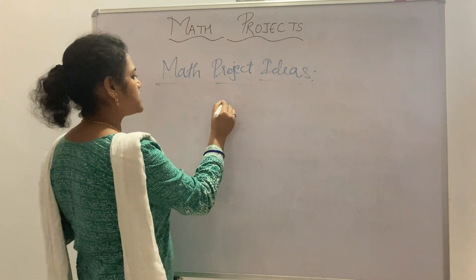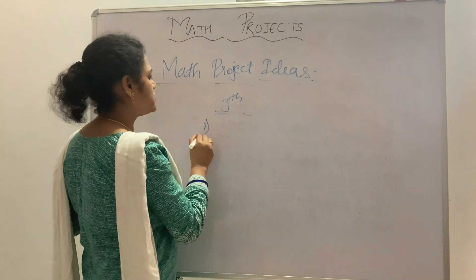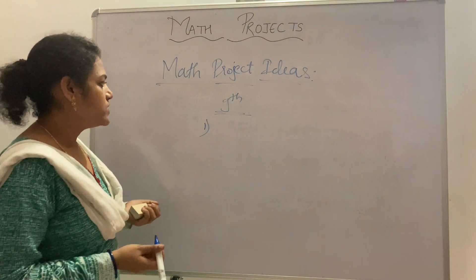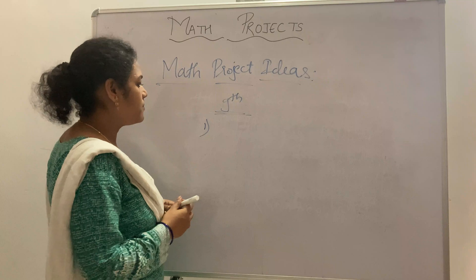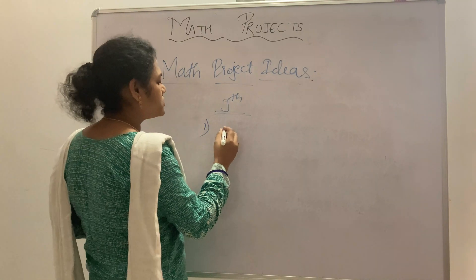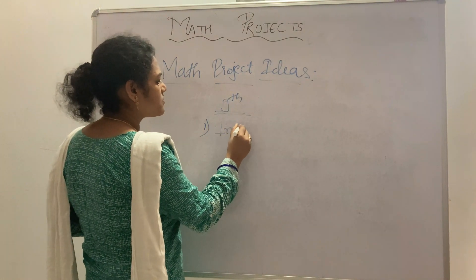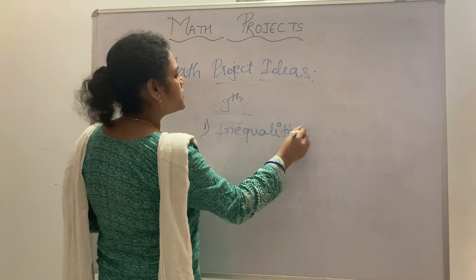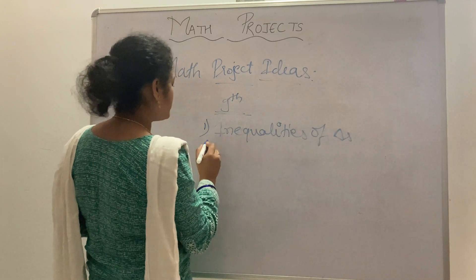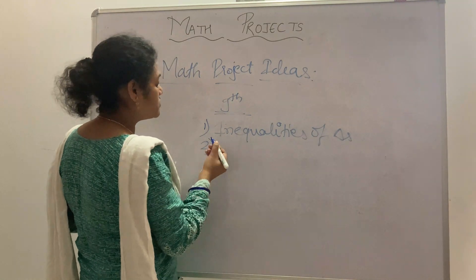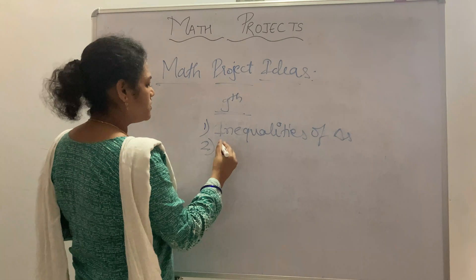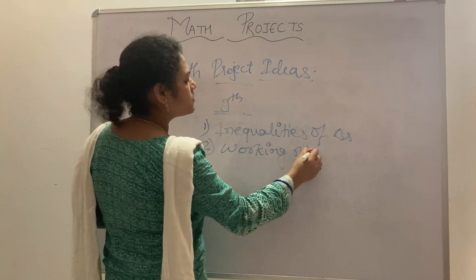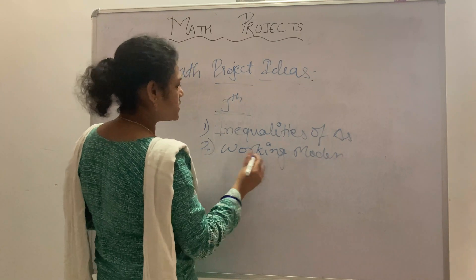For Class 9, the projects are as follows. You can find out the inequalities of triangles. You can make a working model on the Pythagoras theorem.